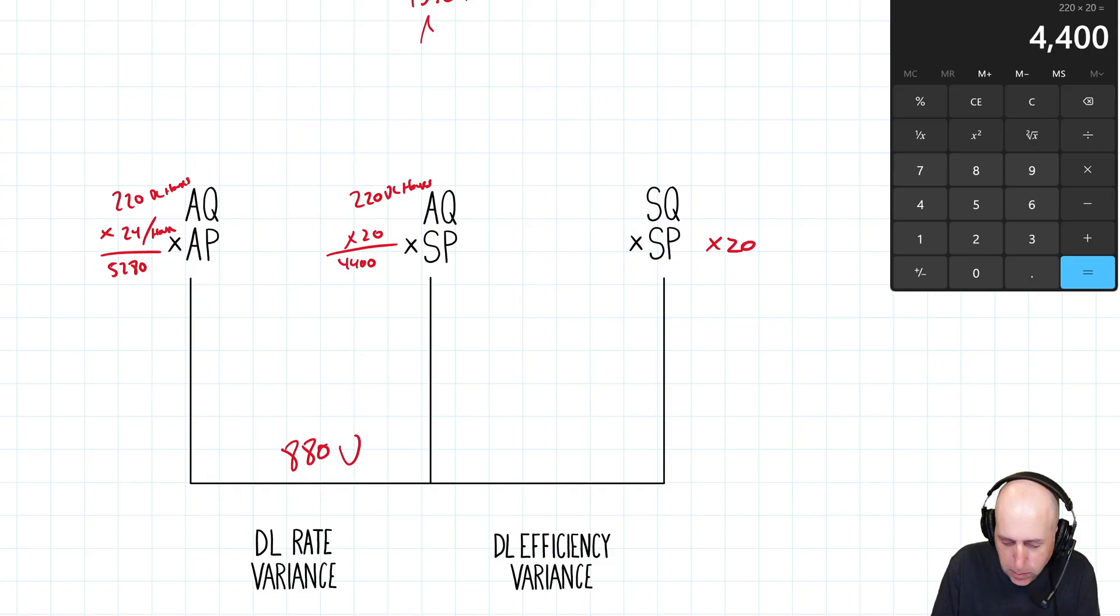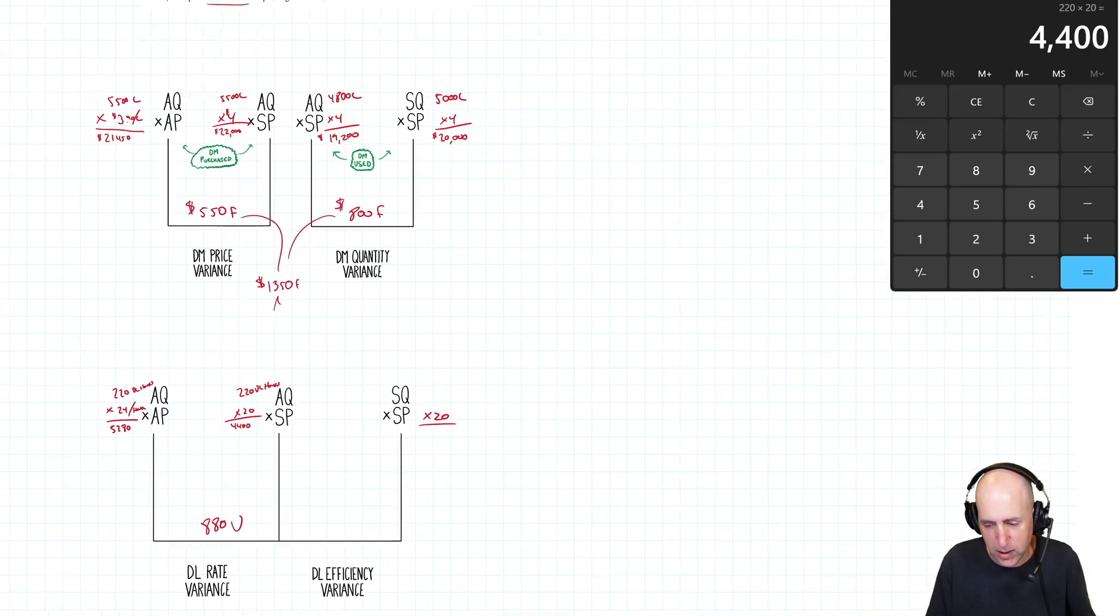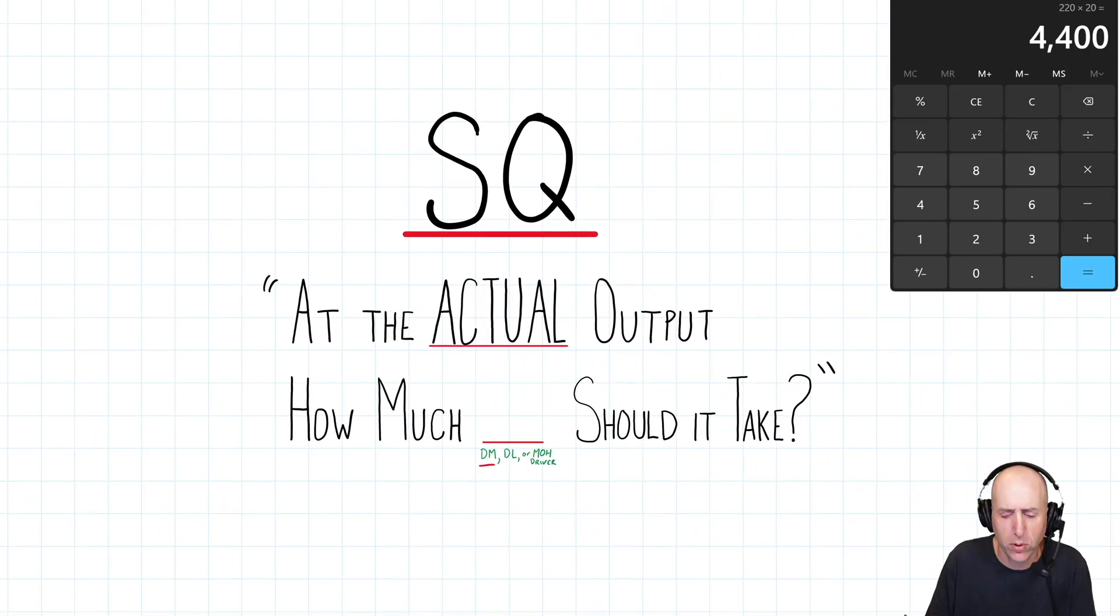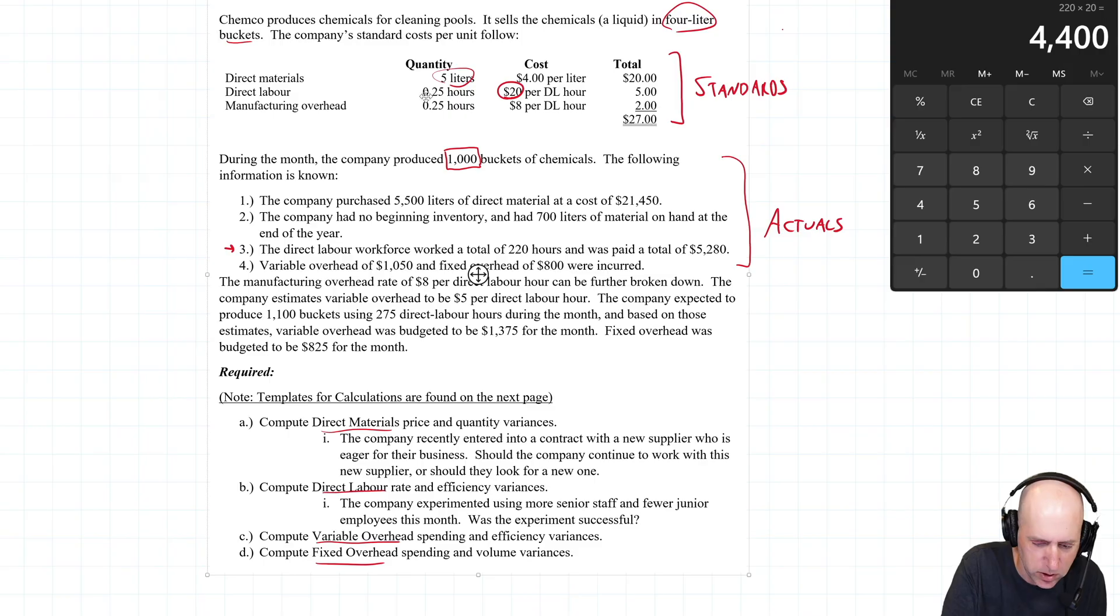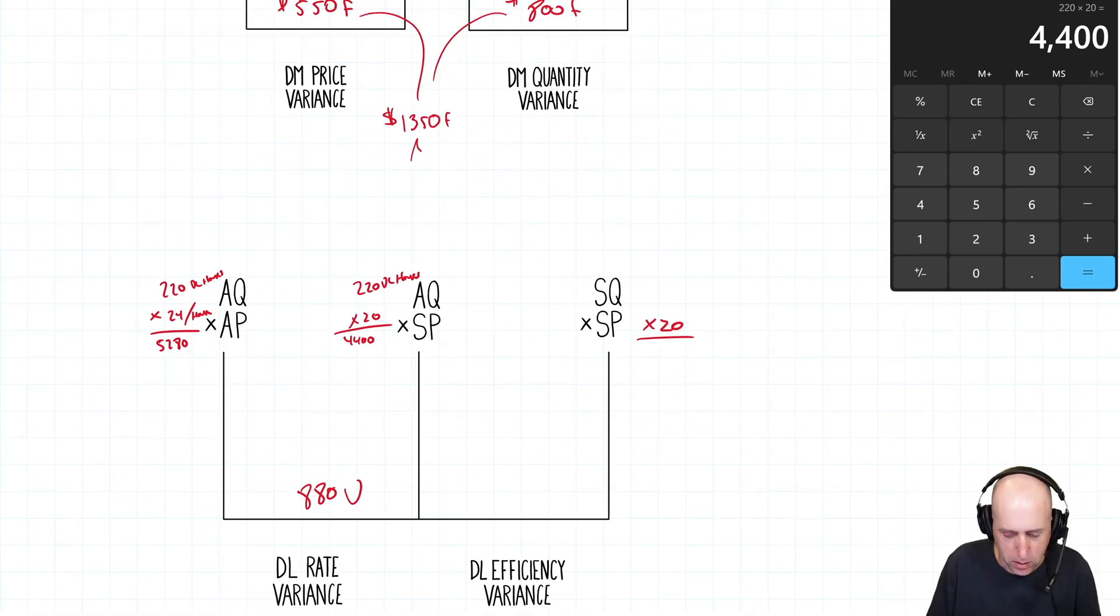SP remains 20 in the last part of this. And once again, we're answering that question: at the actual level of output, I think we made 1,000 buckets of chemicals here, how much labor should it have taken? How many hours of labor should it have taken? 1,000 buckets of chemicals, it's supposed to take, according to the standard, 0.25 hours. So 250 hours is what it's supposed to take. So SQ, 1,000 times 0.25 equals 250 direct labor hours. 250 times 20 is 5,000.